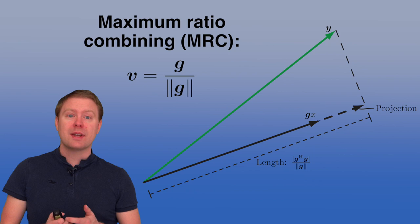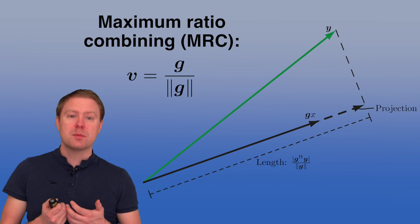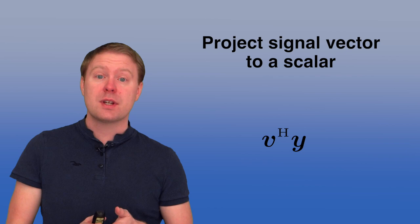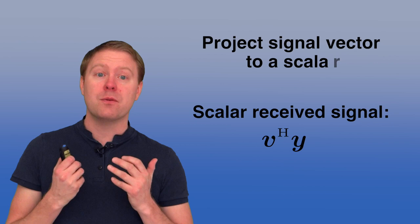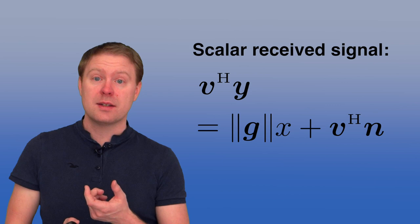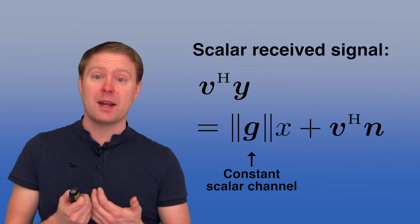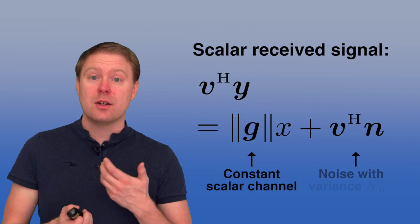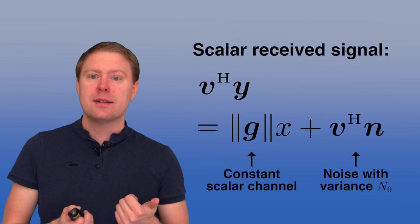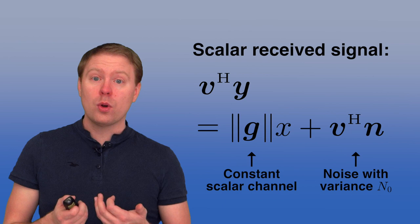In this way, you get all of the received signal power, but only some of the noise power, because the noise pointing in other directions disappears in the projection. By taking the inner product between Y and the combining vector V, we effectively project the received signal to a scalar. We are now receiving only one value as if we had one antenna, but it is the best combination of the different antennas. The transmitted signal X is multiplied by the norm of G, and the noise term — the inner product of the noise vector N with the combining vector — also has variance N0.